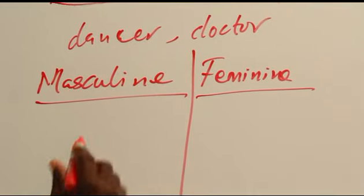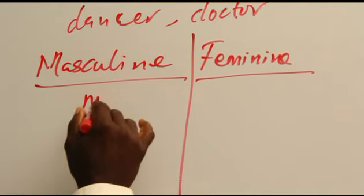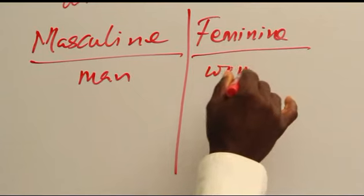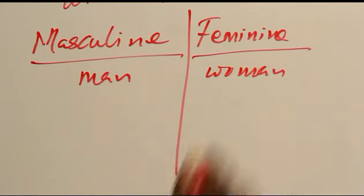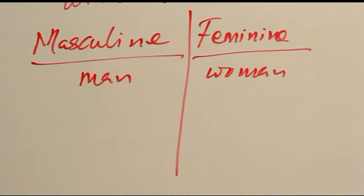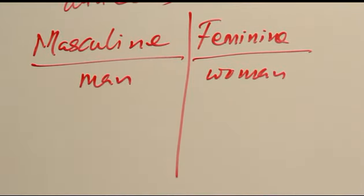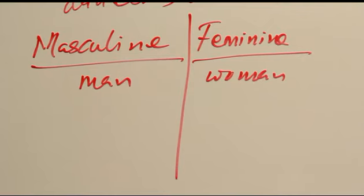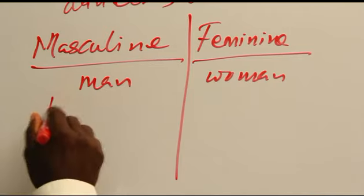Now we know the simple ones. If you have a man then the feminine is woman, and that can go for a number of other ones. We can talk of boy and girl, male and female — that is masculine and feminine.